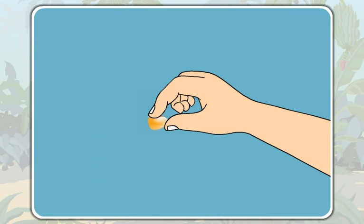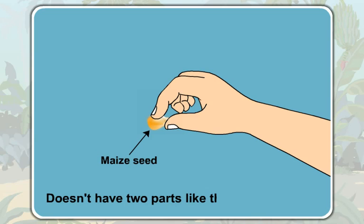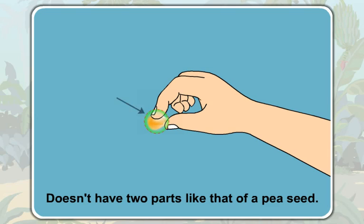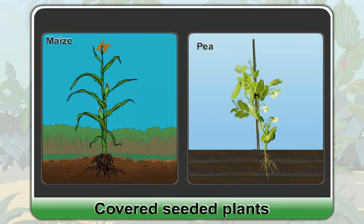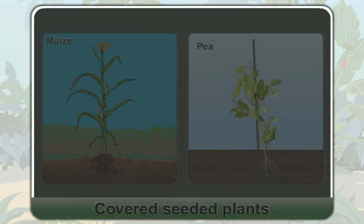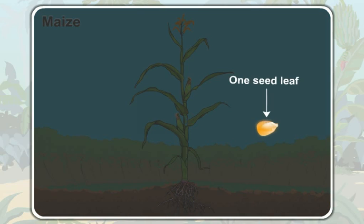Now let us try to open the outer cover of the maize seed. It doesn't open. Actually, we cannot open the outer cover of the maize seed. It also doesn't have two parts like a pea seed — it has only one part. So, a maize seed has only one seed leaf. Both the maize and the pea are covered seeded plants, but one has two seed leaves while the other has only one seed leaf.